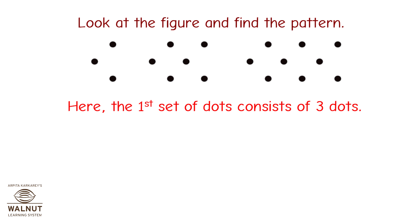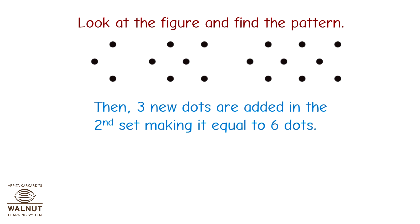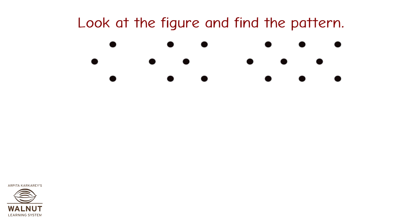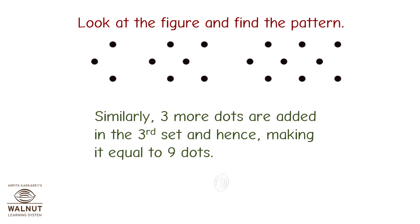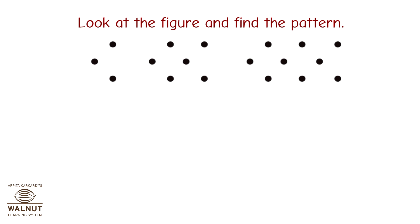Here, the first set of dots consists of three dots. Then, three new dots are added in the second set making it equal to six dots. Similarly, three more dots are added in the third set, making it equal to nine dots. This pattern will continue.